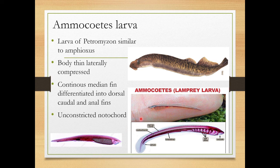Both are morphologically similar in structure. The morphological characters include: the body is thin and laterally compressed, a continuous median fin is present which is differentiated into dorsal, caudal, and anal fins, and there is presence of an unconstricted notochord, which is a primitive character.